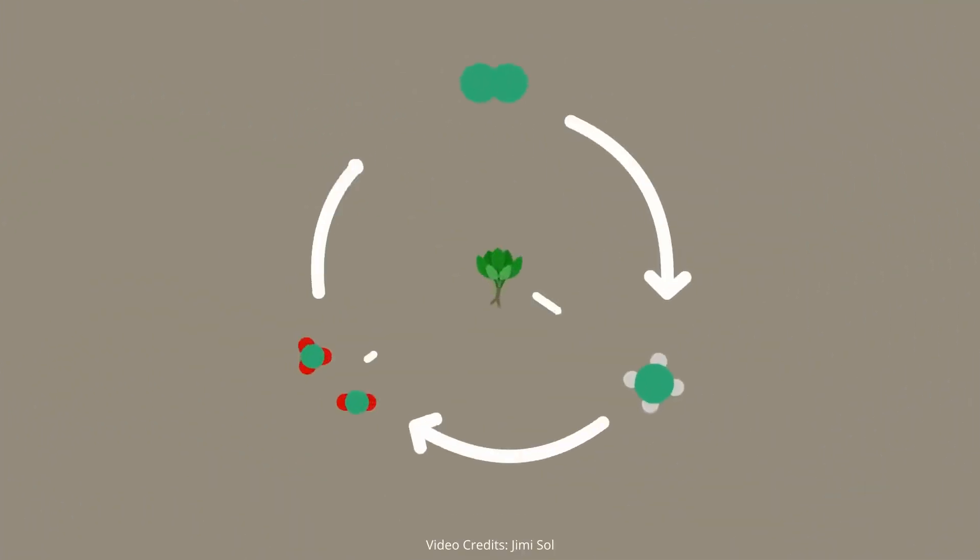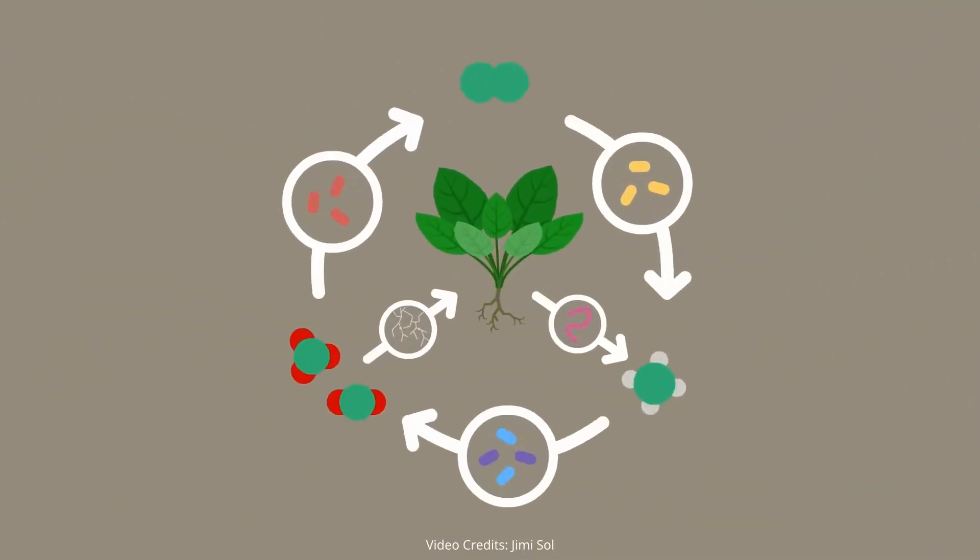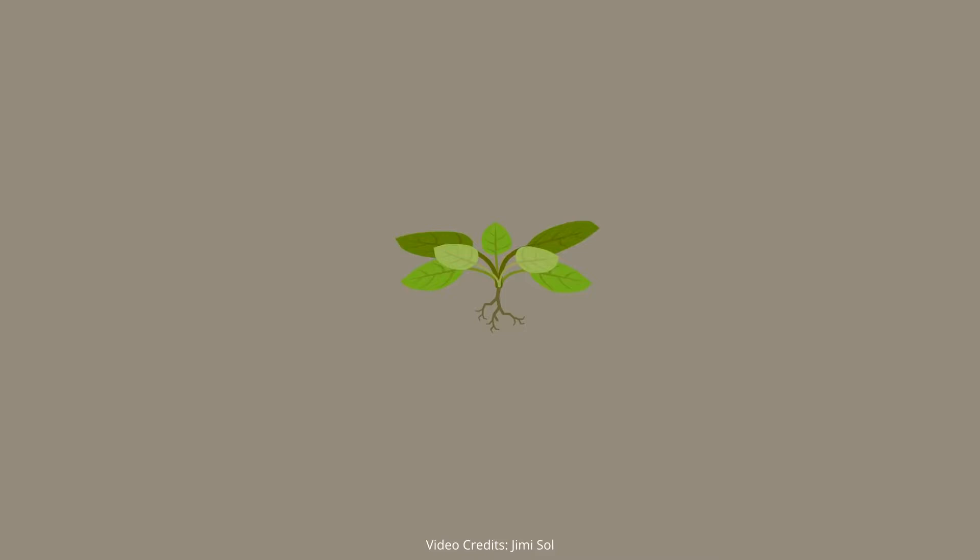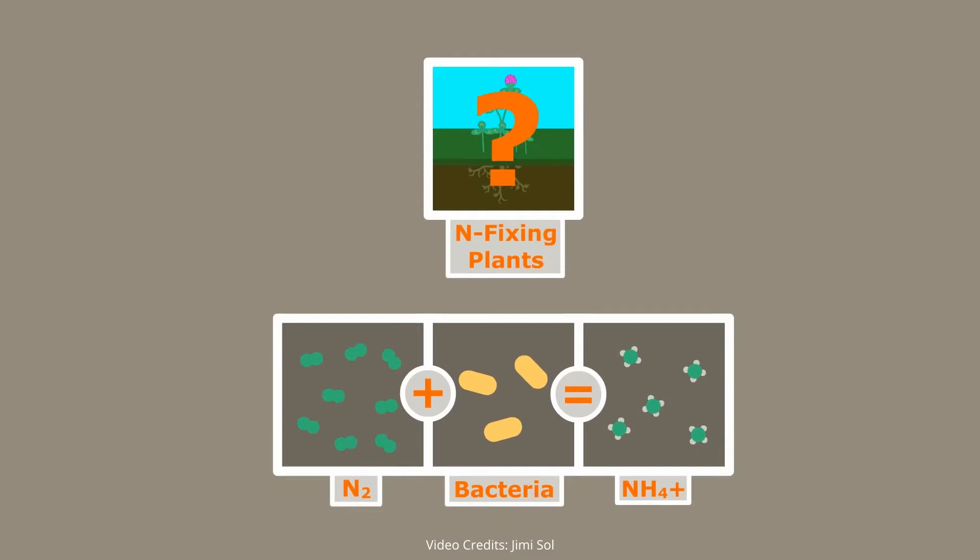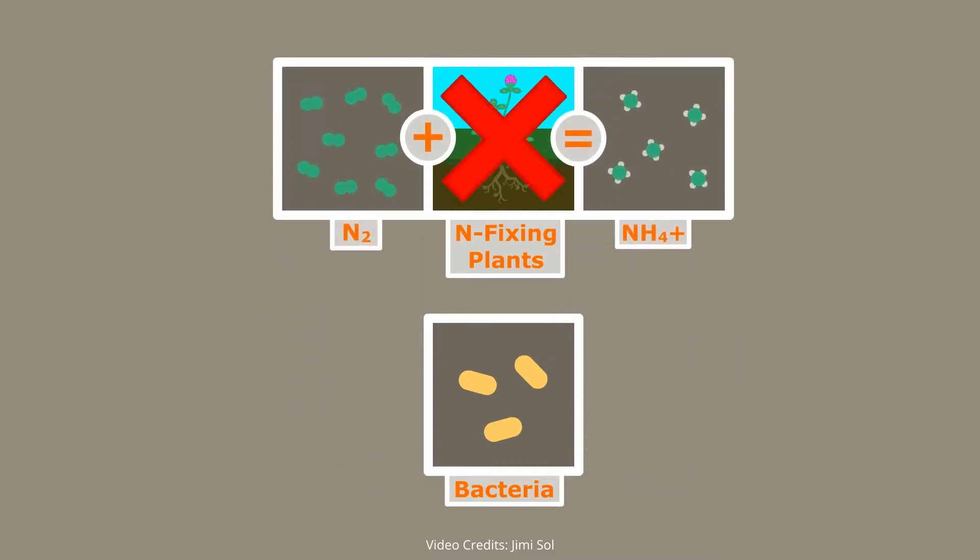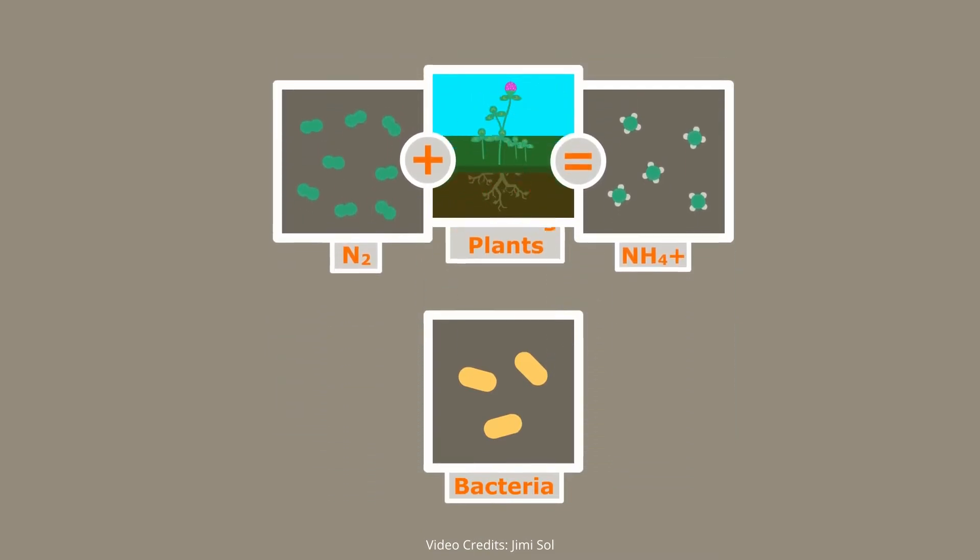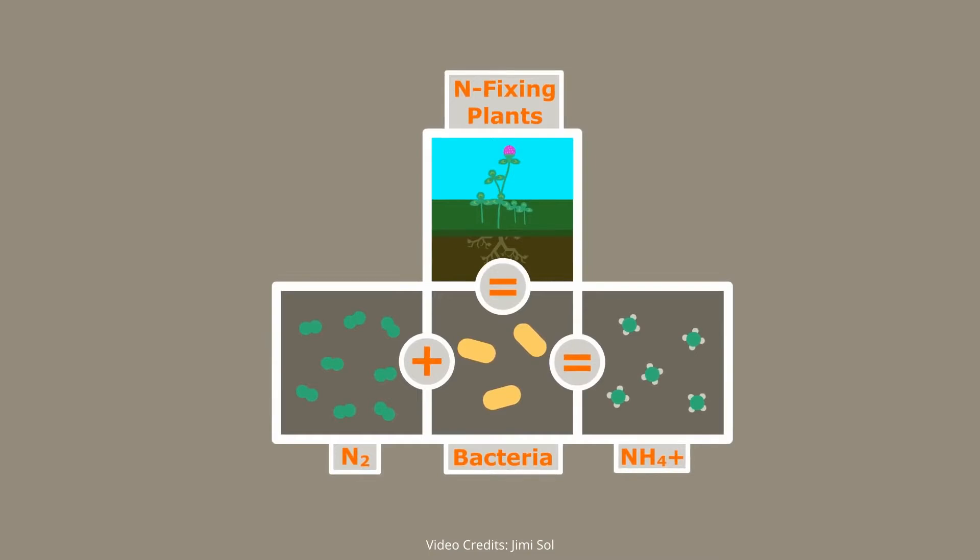Okay, so we know that the nitrogen cycle depends heavily on life in the soil. Without them, the plants would be quite sad. But you may have noticed, if the fixation process is done by bacteria, where do nitrogen-fixing plants fit into this? Believe it or not, nitrogen-fixing plants don't fix nitrogen. Rather, they create habitat for the bacteria that do.